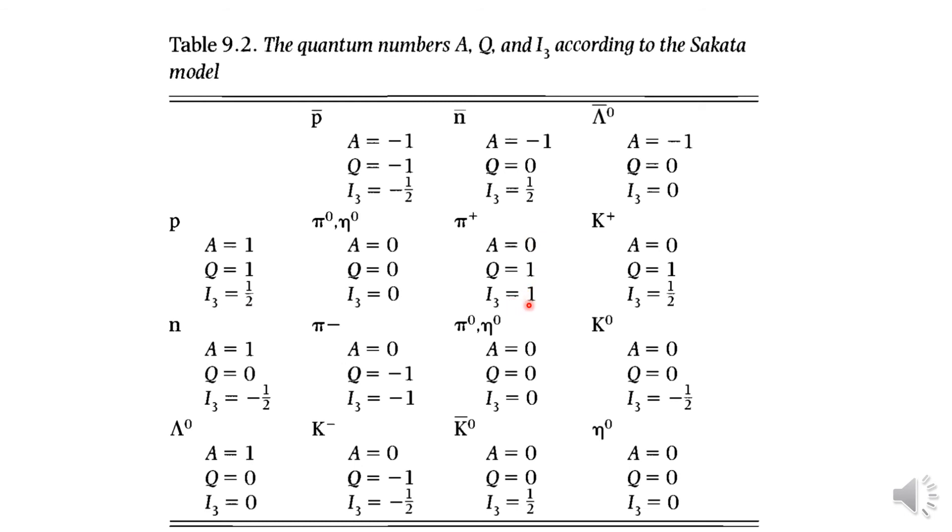Similarly for any particles in this group, you can see their quantum numbers are just the sum of the quantum numbers of their constituent particles. So the Sakata model can predict the quantum numbers of every particle, here the mesons, by the constituent particle quantum numbers.